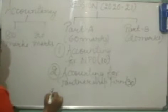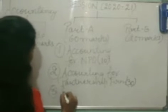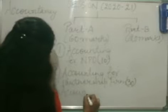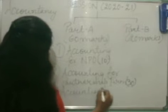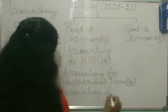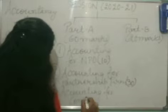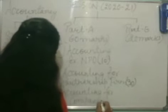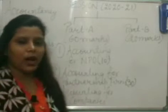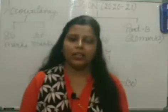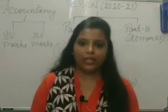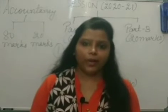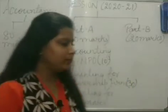The next unit consists of 20 marks, that is, Accounting for Companies. In this unit, we will be discussing about how companies issue shares, debentures, and redemption of debentures.